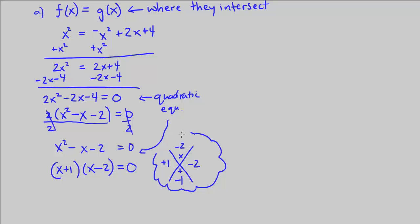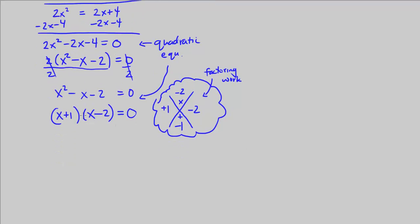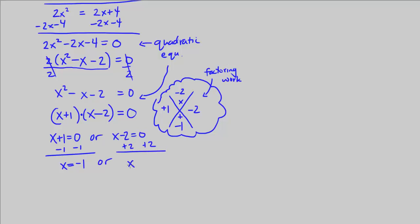I'm going to put this factoring work in a bubble. Since this equation equals 0 and we're multiplying two terms, either x plus 1 equals 0, or x minus 2 equals 0. Solving the first, subtract 1 from both sides: x equals negative 1. Solving the second, add 2 to both sides: x equals 2.